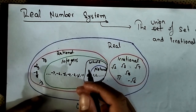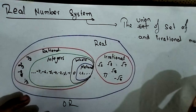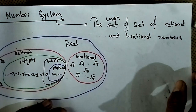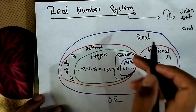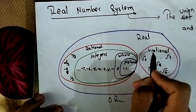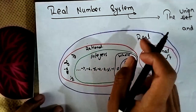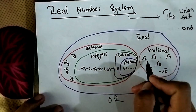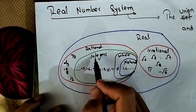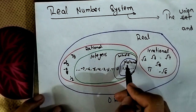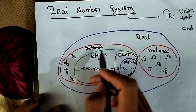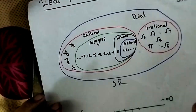I am going to talk about the real number system. The real number system is the union of the set of rational and irrational numbers. The set of all numbers — the set of integers, the set of rational numbers and irrational numbers — together form the real number.